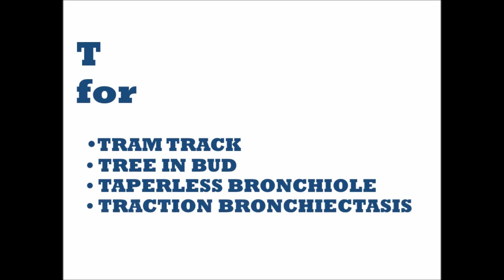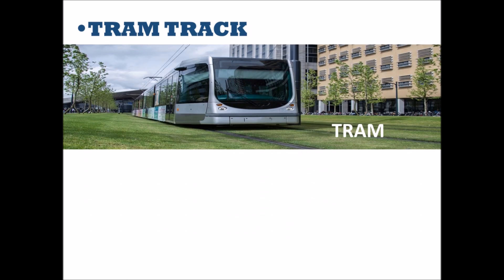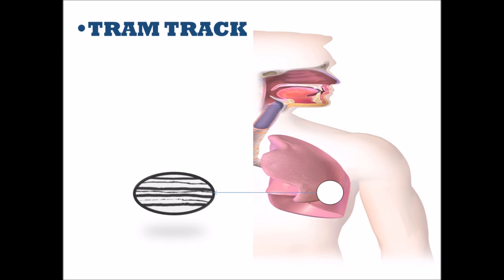T is for tram track sign. This is a tram, and this is a track. When the image of a bronchiectatic lung is observed, we can see lines similar to a tram track. These lines are formed by thickened bronchial walls.